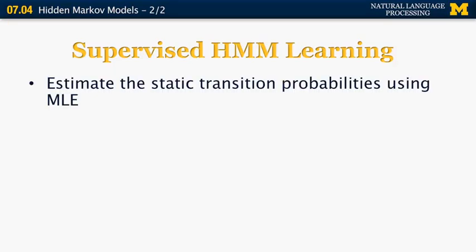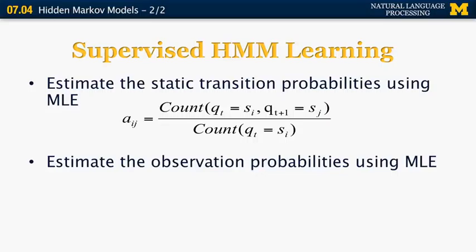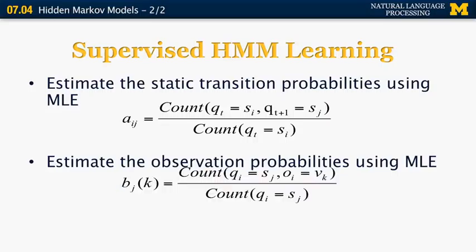Let's first look at supervised HMM learning. We want to estimate the transition probabilities and the emission probabilities using maximum likelihood estimates. A very simple method is to count how many times a certain pair of states appears and divide by the total number of instances of the first state. We can do the same for observation probabilities by counting how many times a certain word and a certain part of speech appear together, then dividing by the number of times that particular part of speech appears. We can also use smoothing for any unseen conditional probabilities.